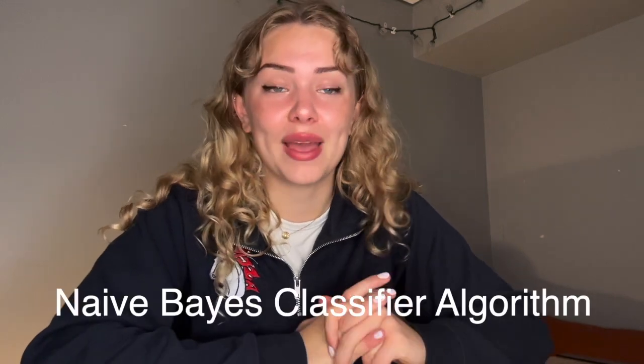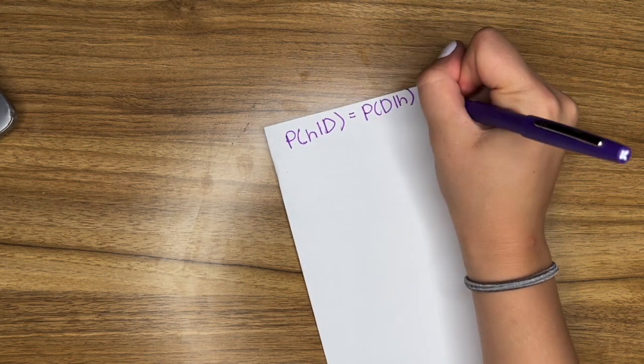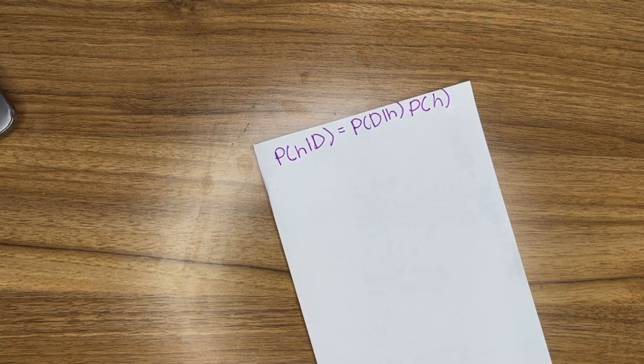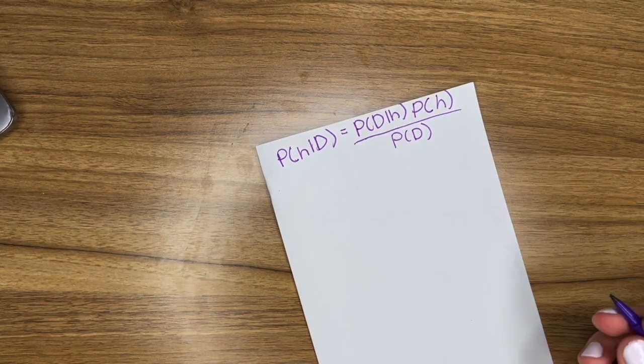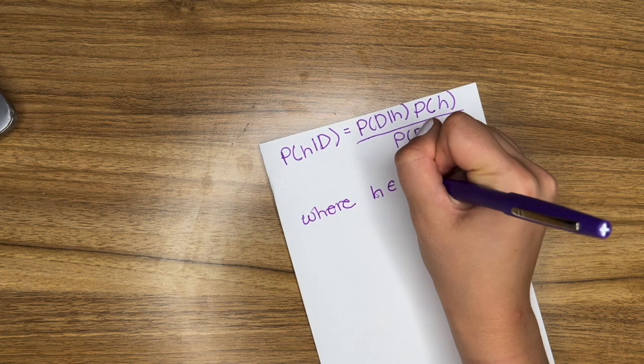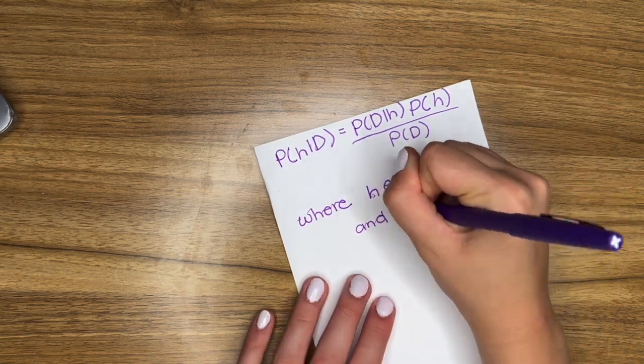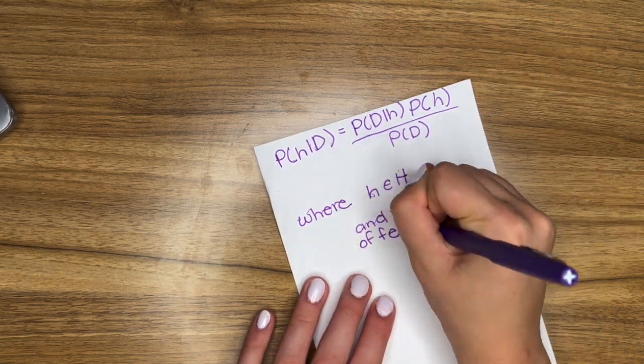I find it very interesting to look at different models and algorithms that make this possible. So in this video, I'm going to be talking about the naive Bayes algorithm or classifier algorithm. Bayes' theorem was first coined by a mathematician called Thomas Bayes, who was able to determine a way of looking at an outcome and working backwards to determine a probability that a specific feature contributed to that outcome.